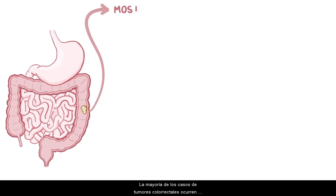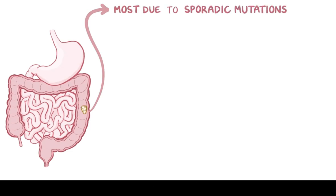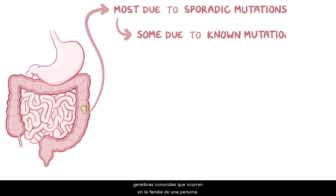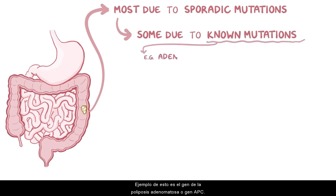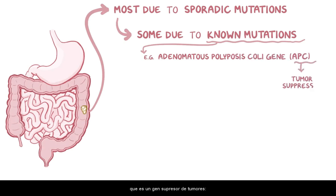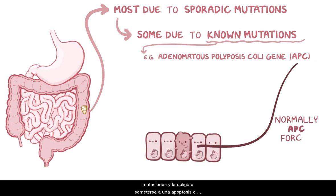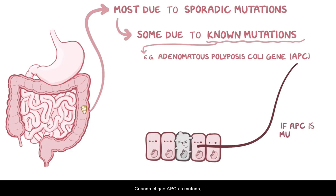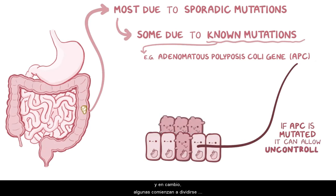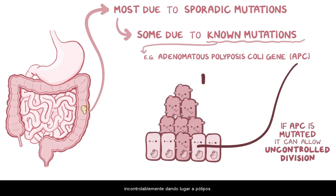Most cases of colorectal tumors happen because of sporadic mutations, but a small number are caused by known genetic mutations that run in a person's family. An example of this is the adenomatous polyposis coli gene, or APC gene, which is a tumor suppressor gene. Normally, the APC protein identifies when a cell is accumulating a lot of mutations and forces it to undergo apoptosis, or programmed cell death. But when the APC gene is mutated, the mutated bowel cells don't die, and instead some start dividing uncontrollably, giving rise to polyps.